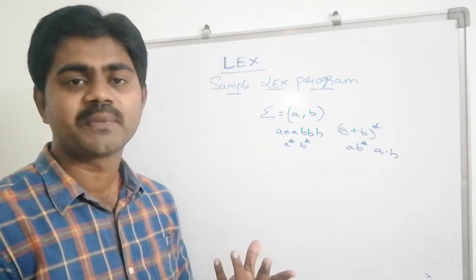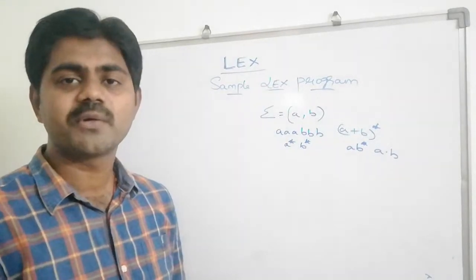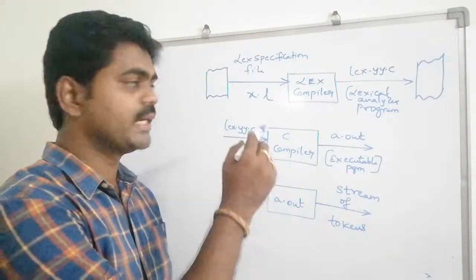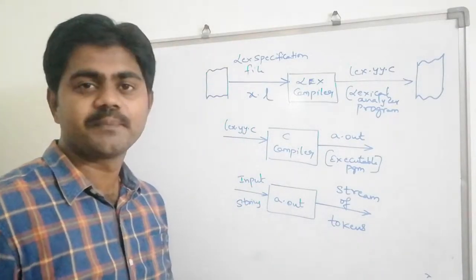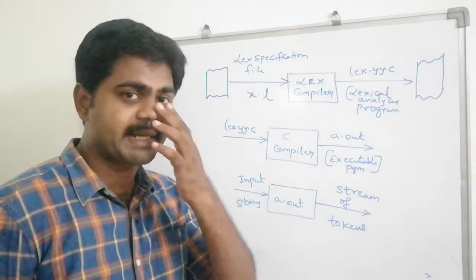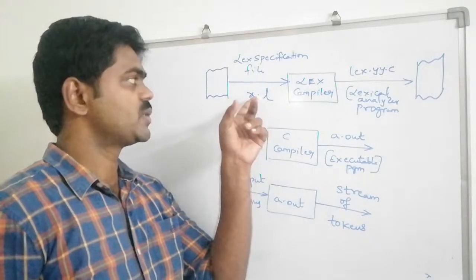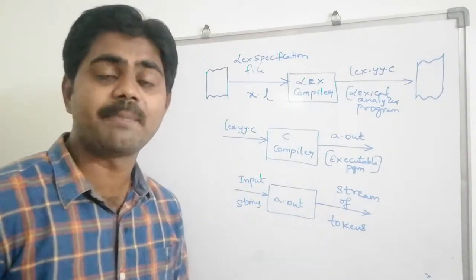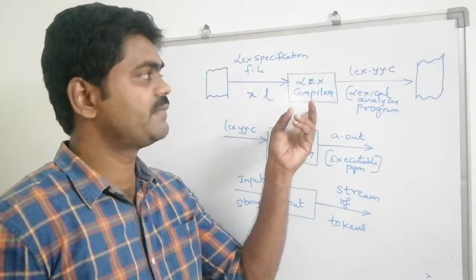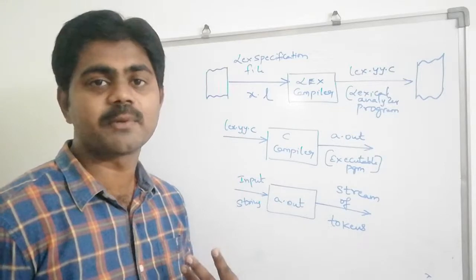Here, your Lex program is a specification file. We should have a specification file, and we should know its extension. For lexical analysis, we call it a Lex specification file, and the extension is .l — remember, x.l. This specification file is given to the Lex compiler. The Lex compiler generates lex.yy.c, which is the lexical analyzer program.